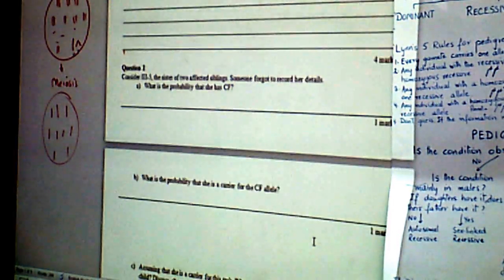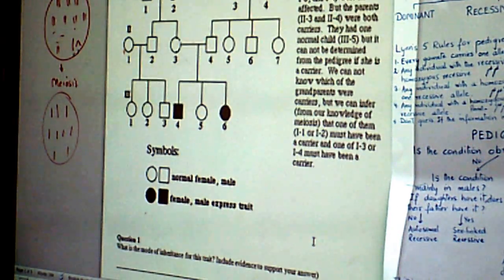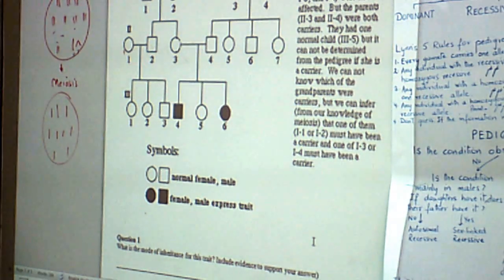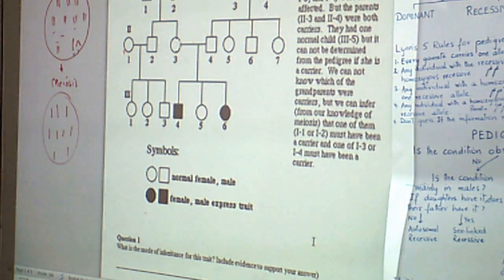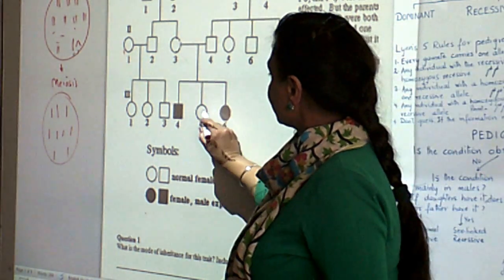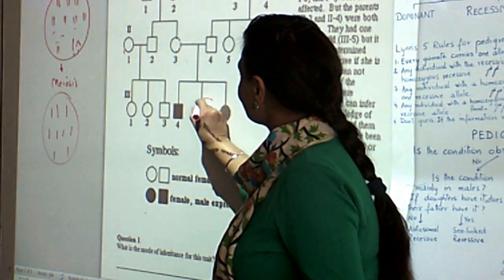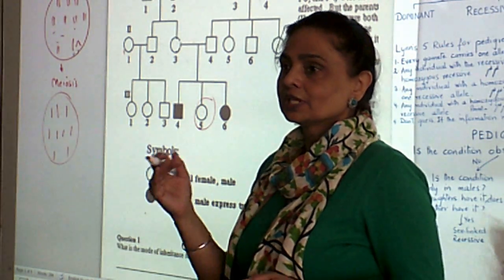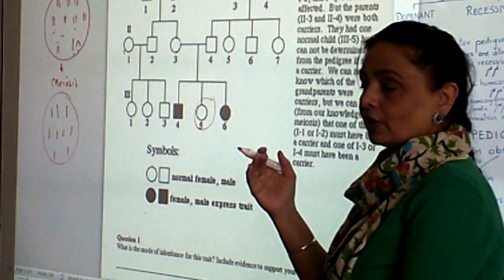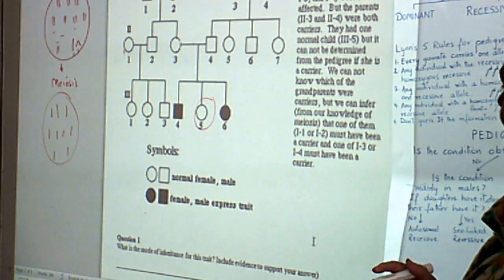What is the probability that she has that condition? Now let me put up the thing. 3-5. So this is a person 3-5. Say someone forgot, so we don't know whether she's affected or not. What are the chances that she is affected?